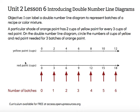So this particular question says to find the amount of yellow and red paint needed for three batches. So ignoring zero, I would count over one, two, three batches — and that would be how much yellow paint and red paint I would need if I wanted three times as much of the orange paint as what I would normally make.